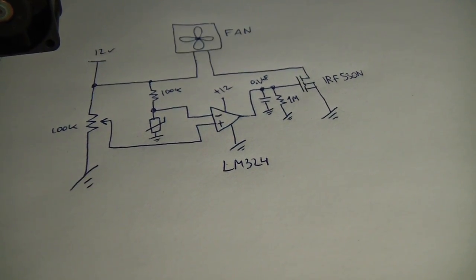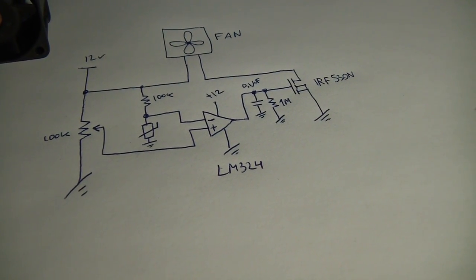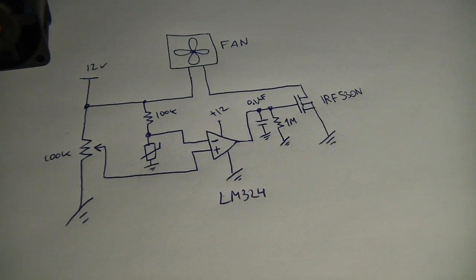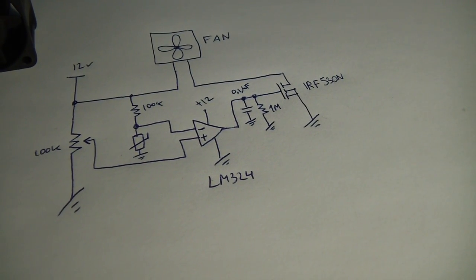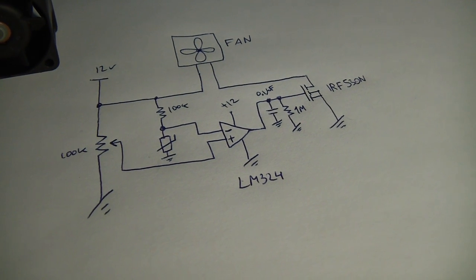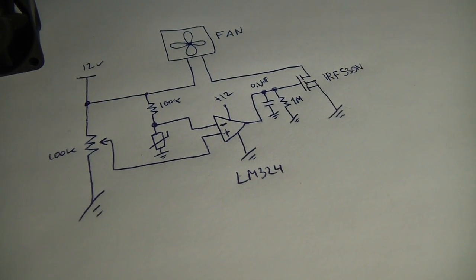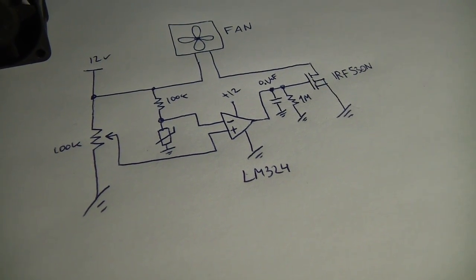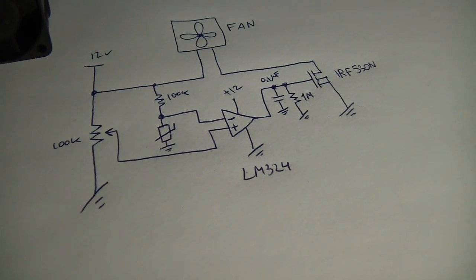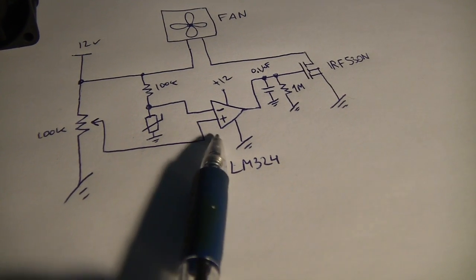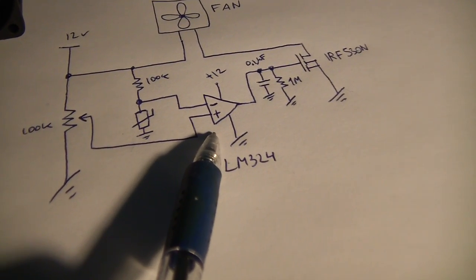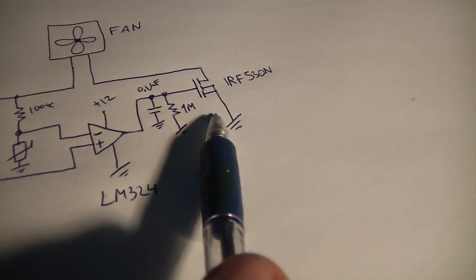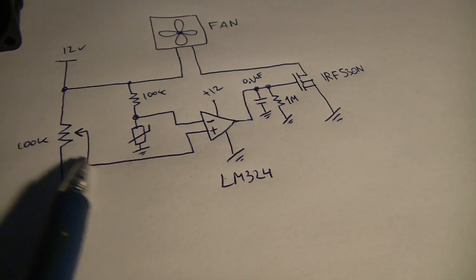Good morning YouTubers, it's Artyom and I have a small update about my car amplifier that I'm building. It's a fan controller circuit which will activate the fan when the amplifier gets too hot. The basic principle of this circuit is that I have a comparator built on an LM324, I have a MOSFET, and I have a thermistor.